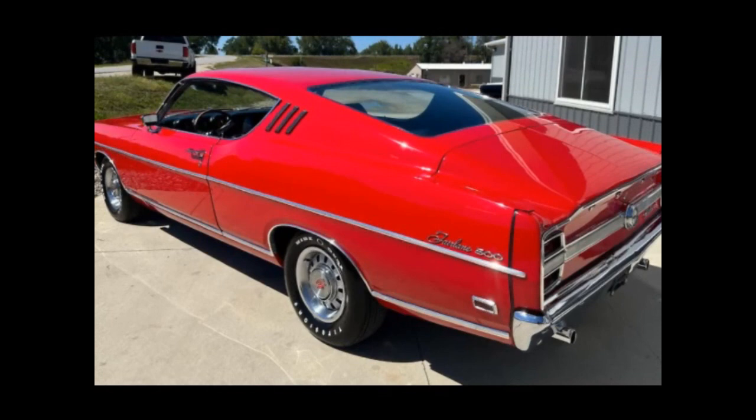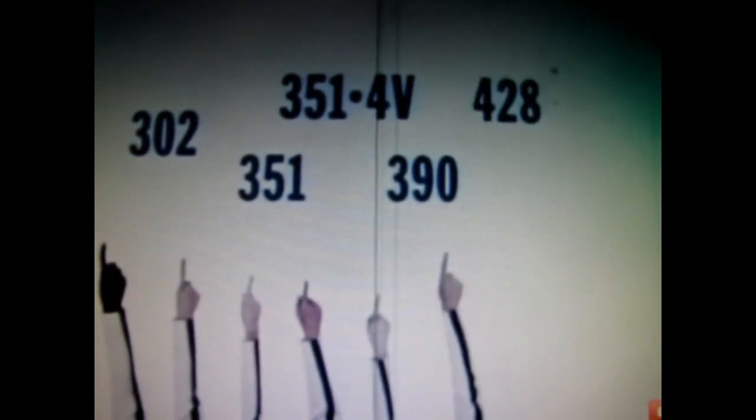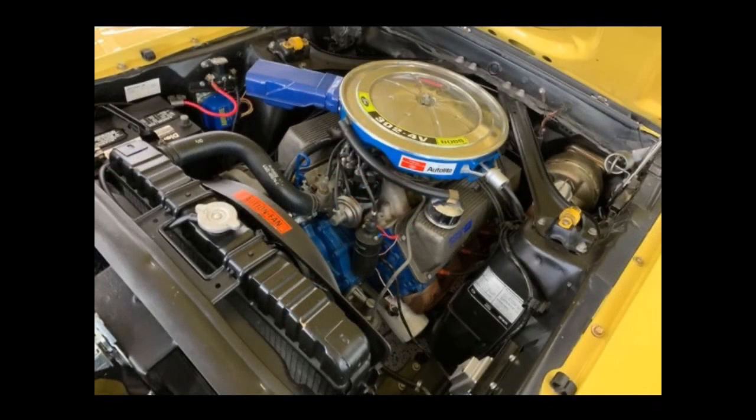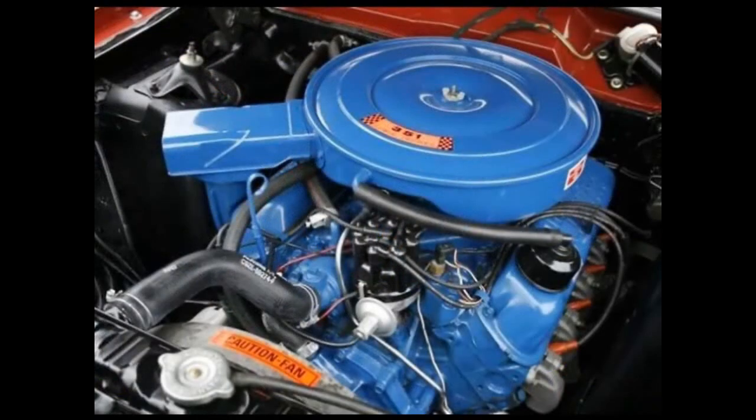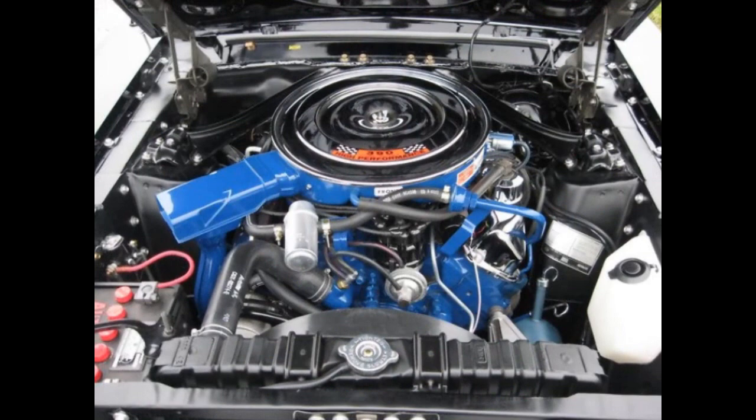A smooth, flat panel was seen gracing the back between the taillights. Engines for 1969 included the 250 cubic inch Fairlane Inline 6, 302 cubic inch Windsor V8, 351 cubic inch Windsor V8, 390 cubic inch Thunderbird V8, and the 428 cubic inch V8.